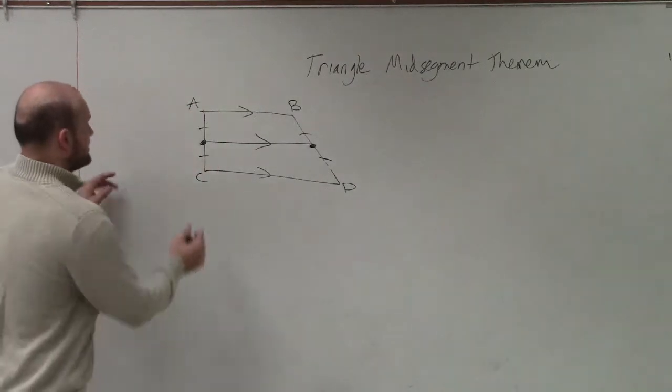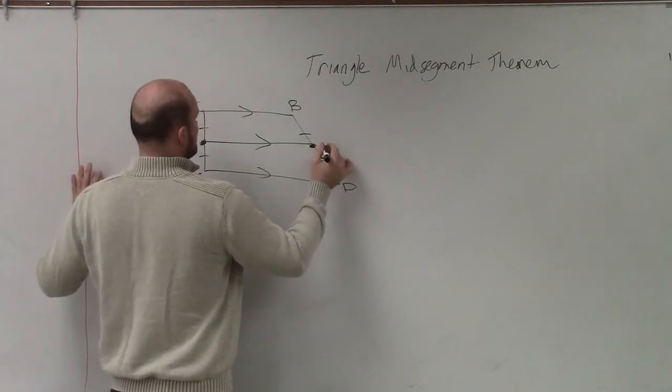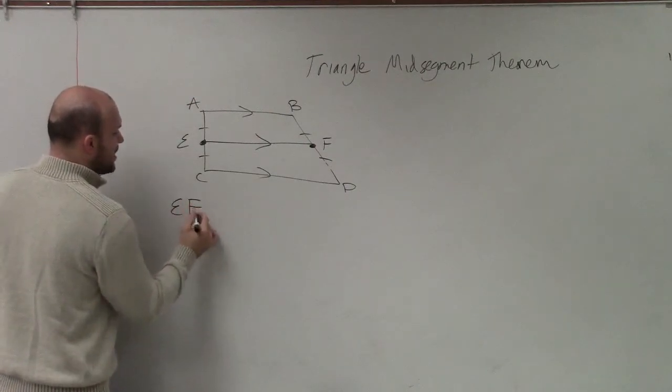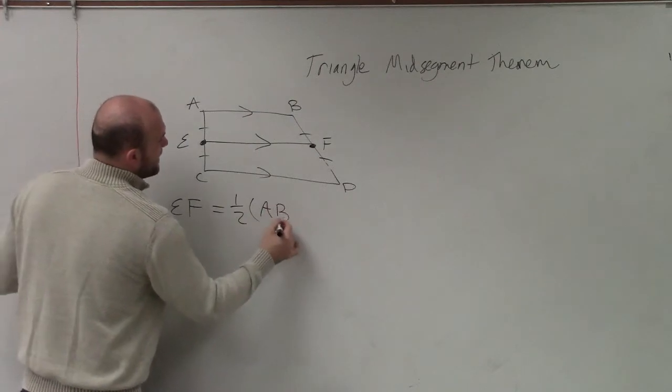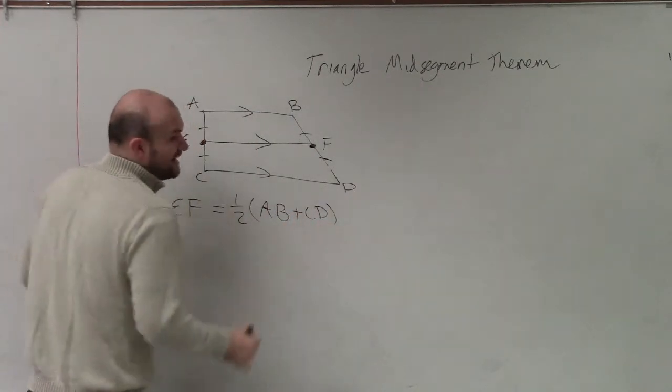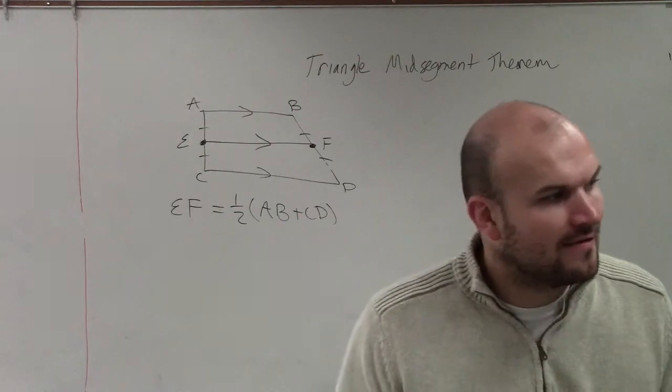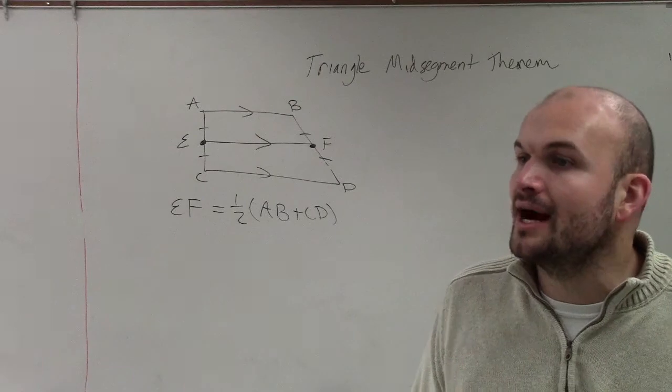And then also, we can find this length. Let's call this Eric and Frank. What we could say is, Eric and Frank is equal to one-half the sum of AB plus CD. You have to know that formula for the rest of this year. That's going to come up over and over again on your test.